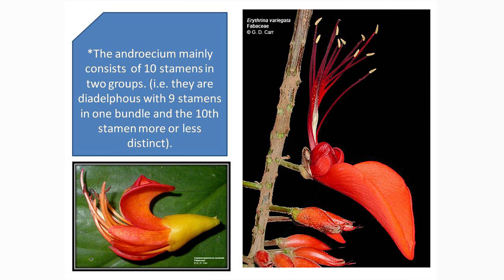With respect to the androecium — the male reproductive structure — it is made up of stamens. Normally there are ten stamens, each possessing an elongated filament and dithecous anthers. These filaments are fused at the base, forming either one bundle or two bundles. If a single bundle is formed, it is called monadelphous. If it forms two bundles of nine plus one, it is called diadelphous condition.